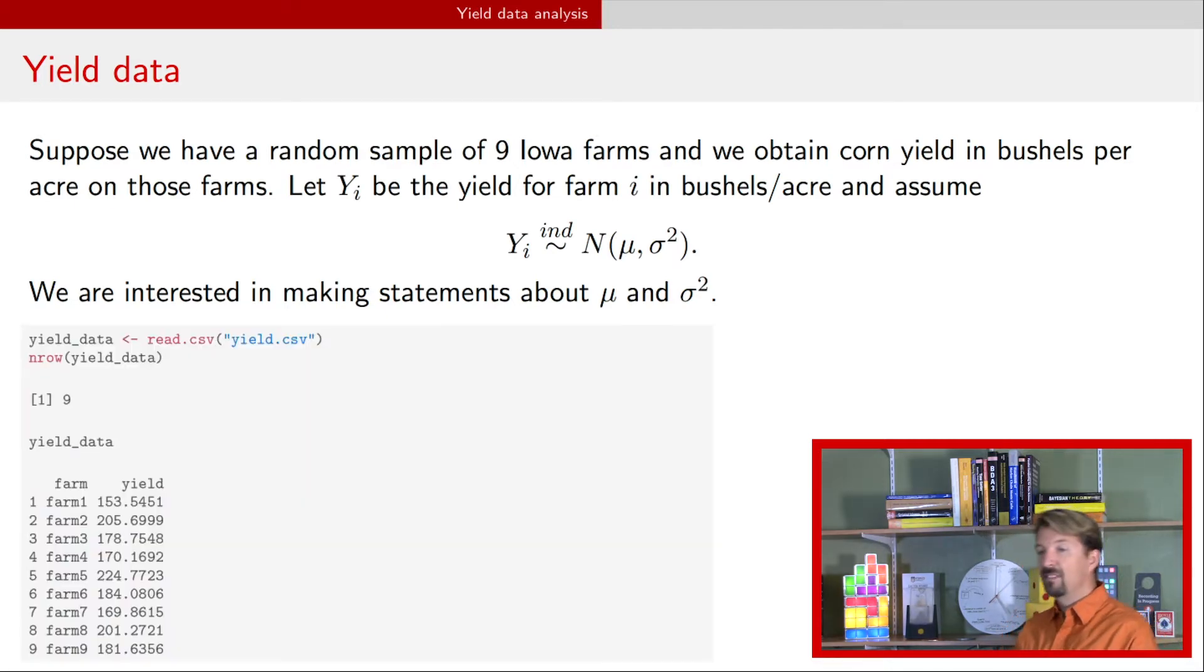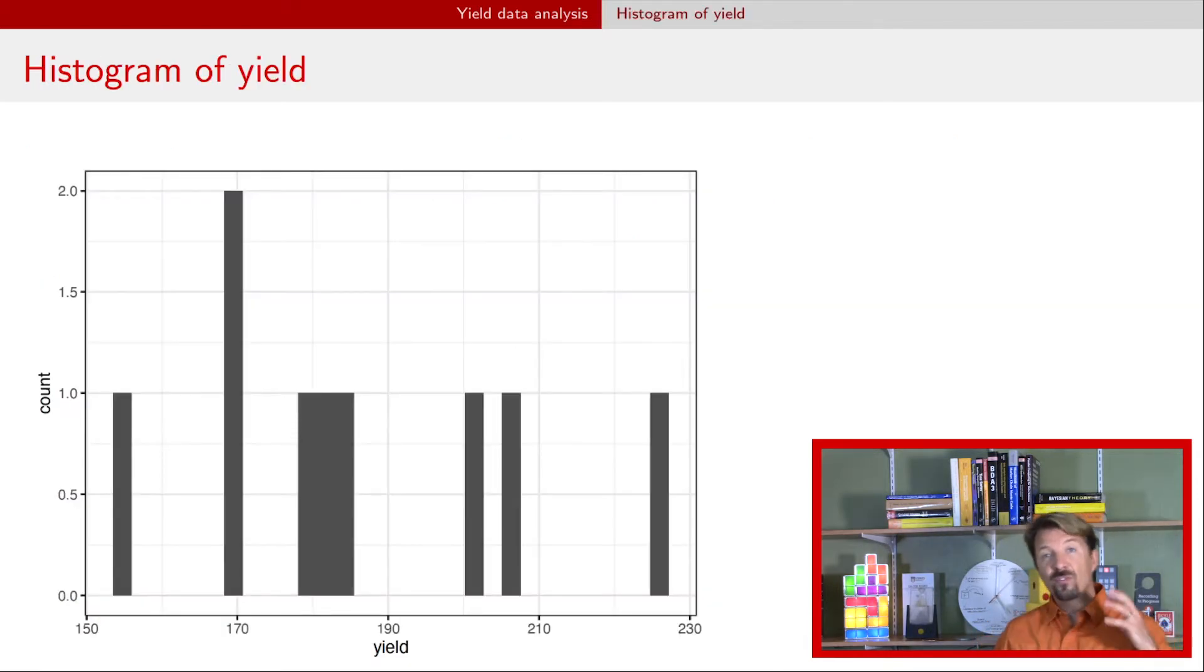Now, the data we've collected is these data right here, just nine observations, so they're all listed up. All right, so the very first thing I would suggest you do when you have data is to take a plot of it and see what it looks like. So here's a histogram of that yield data. Ideally, you'd like to identify whether it seems approximately normally distributed, since we are making that assumption. With only nine observations, it's really hard to see if this histogram approximates a bell-shaped curve. All right, but one thing we can see is that it seems like none of the values are too small or too big relative to what we would expect to see for yield, and so the data at this point seem reasonable.